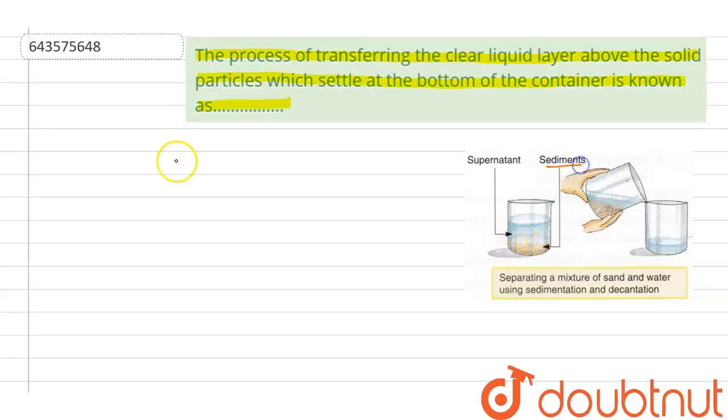In sedimentation, sediment is formed as impurities settle down at the bottom, and the clear liquid here is known as supernatant. So the question is: what is the process called when the clear liquid is transferred?